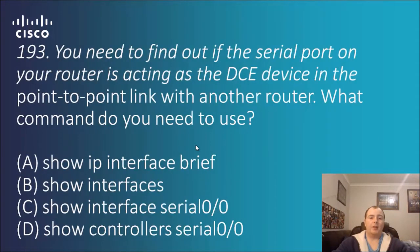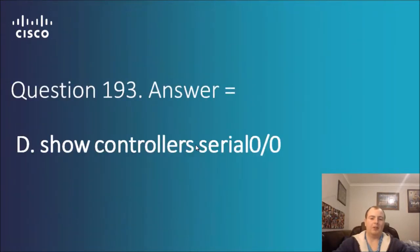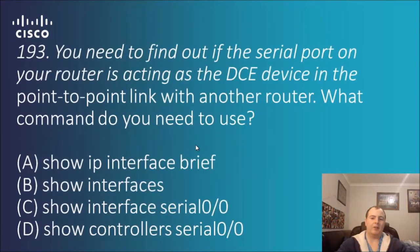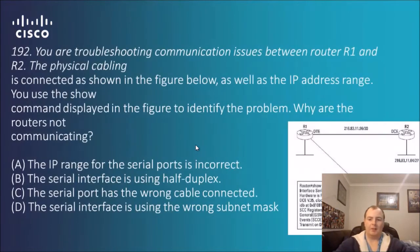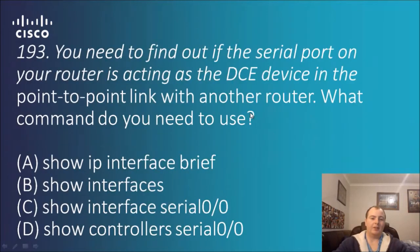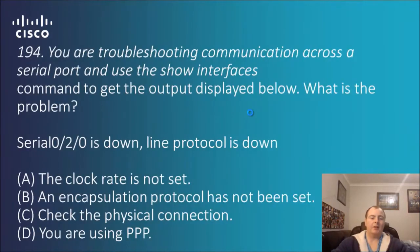Question 193: you need to find out if the serial port on your router is acting as the DCE device in the point-to-point link with another router. What command do you need to use? We just saw this — the answer is D: show controllers serial 0/0. You can use show controllers serial followed by the port number to get that answer.